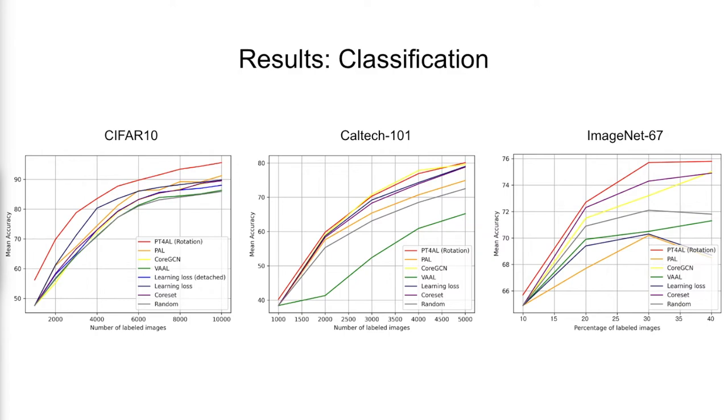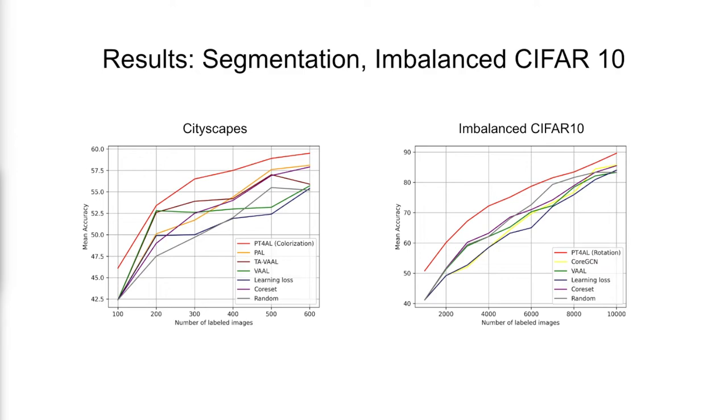On the three classification tasks, our method demonstrates compelling performance across the active learning iterations against other benchmarks. Also notice that on all three datasets, PT4AL starts with a noticeable performance advantage. Such traits are the same for segmentation on the cityscapes dataset and also on imbalanced CIFAR10.